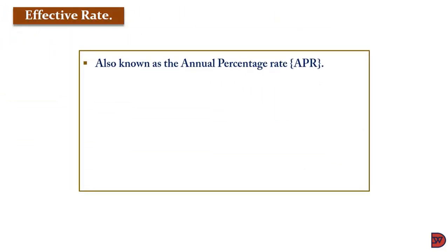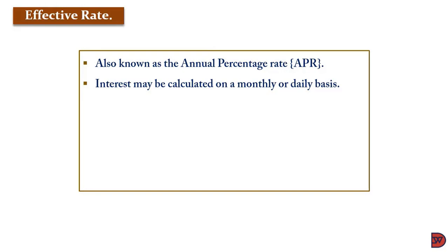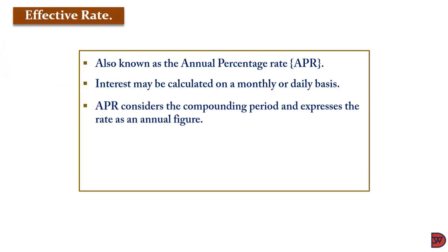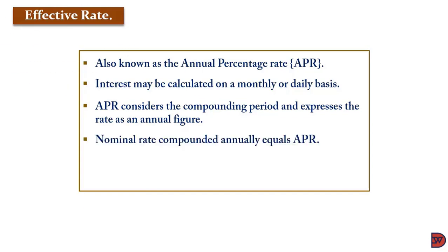Effective rate, also known as the annual percentage rate, is where interest is compounded maybe monthly or at any number of times other than once in a year. This rate takes into consideration the number of compounding activities and expresses it as a rate in an annual figure. As the nominal rate gives a figure assuming compounding done once in a year, the effective rate considers the periodic compounding done in a year.